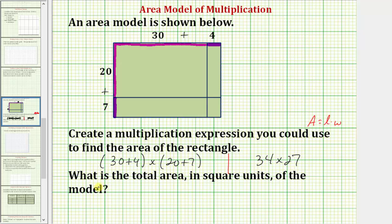And now the second part asks what is the total area in square units of the model. And again, there's more than one way to do this. We could just find the product of 34 and 27, or we could find the area using the area model. Let's show both. Let's first use the area model. So we'll find the area of these four smaller rectangles, and then add the areas to find the total area of the large rectangle.